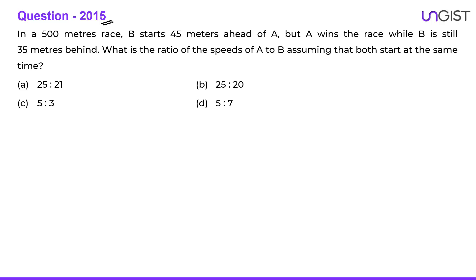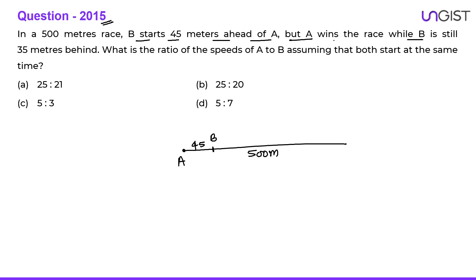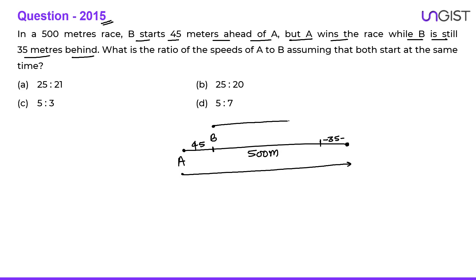In a 500 metre race, B starts 45 metres ahead of A. So this is a track of 500 metres — A is starting from the very beginning but B is starting from 45 metres ahead. But A wins the race while B is still 35 metres behind. So when A reaches the end point of the track, B is still 35 metres behind.